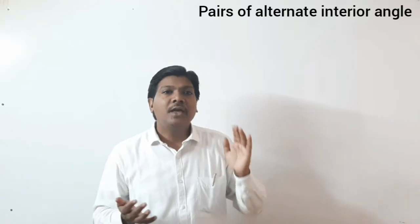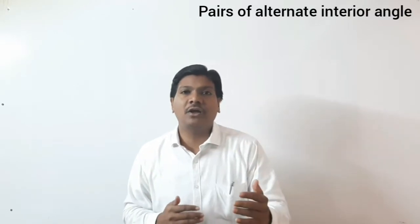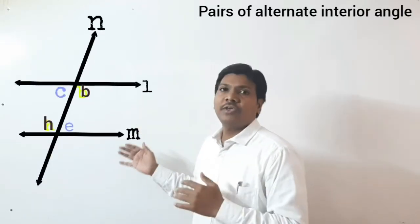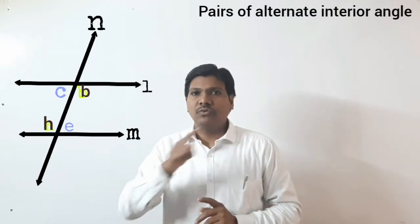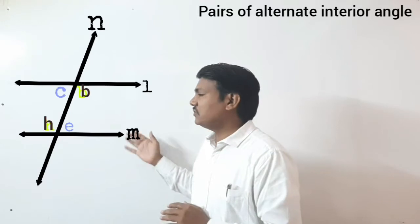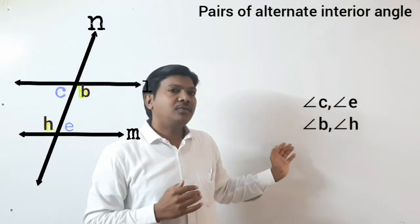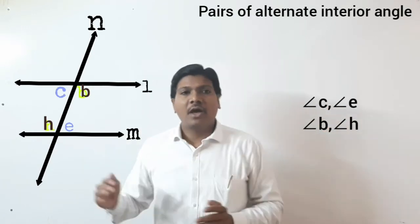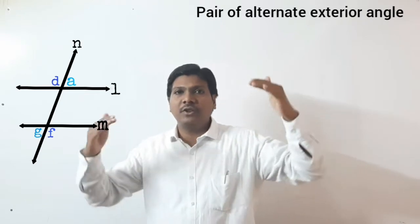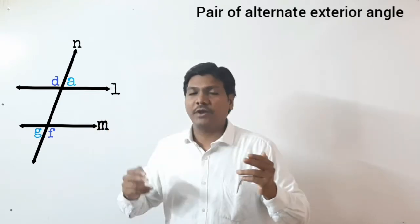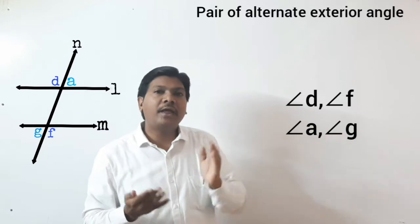Next are pairs of alternate interior angles. In alternate angles, there are two types: alternate interior and alternate exterior. From this figure, the pairs of alternate interior angles are: angle C and angle E, and angle B and angle H. The pair of alternate exterior angles — exterior means outside the two lines — is angle D and angle A.